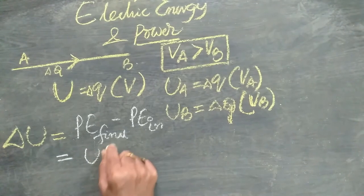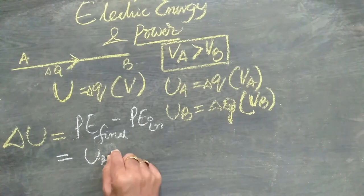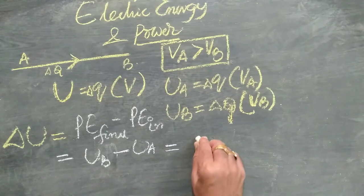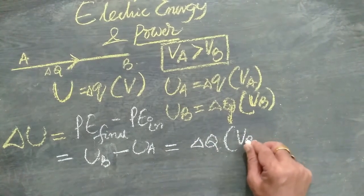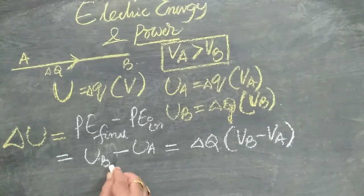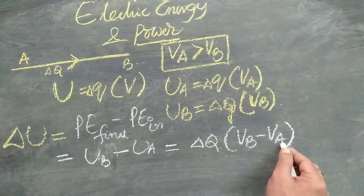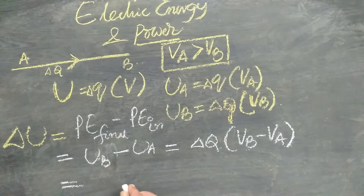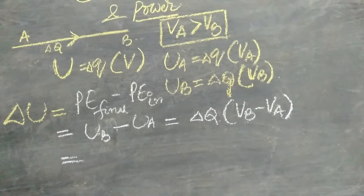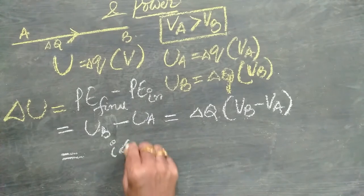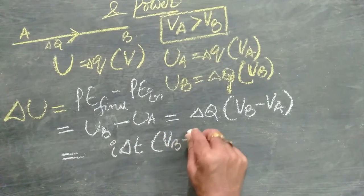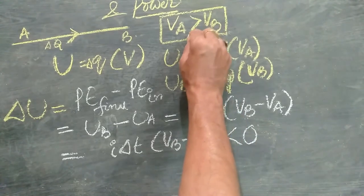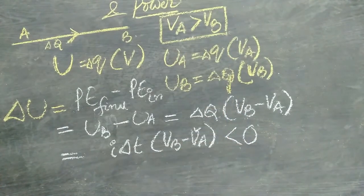That is U at B, let me write the suffix, minus U at A. So this I can write it as delta Q times Vb minus Va. So Ub means delta Q times Vb minus Ua means delta Q times Va. And I took the common. Now from the definition of current, delta Q by delta T is only I. So I can write I delta T Vb minus Va. But as Va is greater, from this step, it is negative. So less than 0.